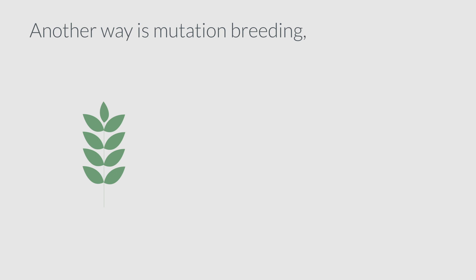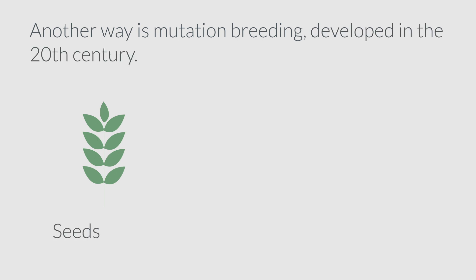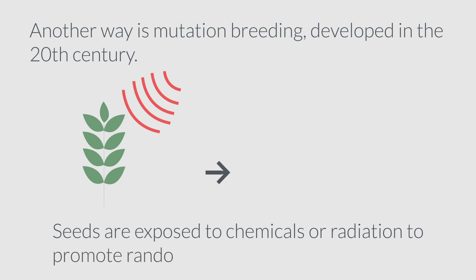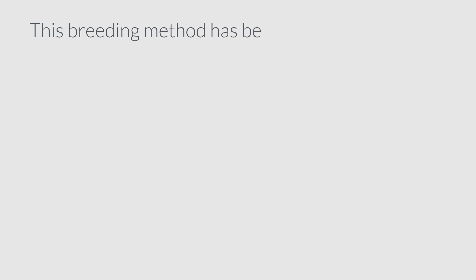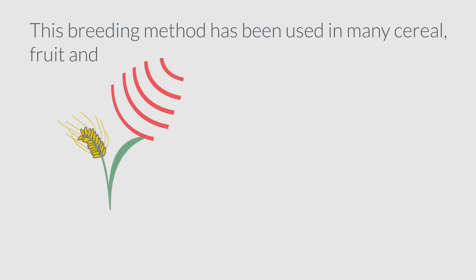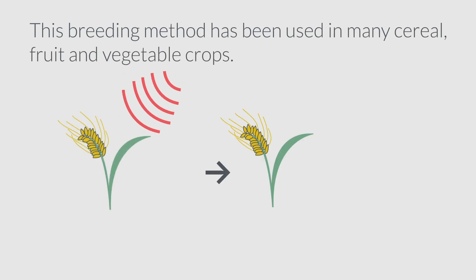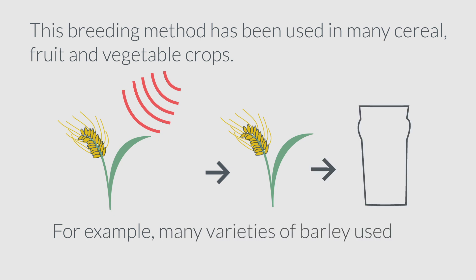Another way is mutation breeding, developed in the 20th century. Seeds are exposed to chemicals or radiation to promote random mutations in their DNA. This breeding method has been used in many cereal, fruit and vegetable crops — for example, many varieties of barley used to make beer were created this way.